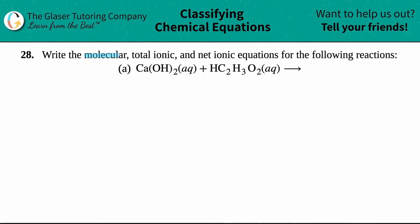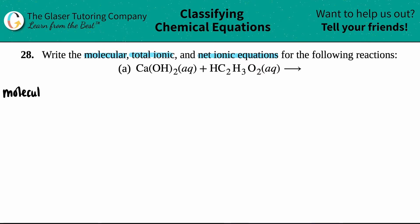Number 28: write the molecular, total ionic, and net ionic equations for the following reactions. Letter A: we have calcium hydroxide Ca(OH)₂ aqueous plus acetic acid HC₂H₃O₂ aqueous, and we have to give the products and get the total ionic and net ionic equations. We always have to find the molecular equation first to get the total ionic, and from there we can get the net ionic. The molecular equation is the balanced equation with all the compounds intact.